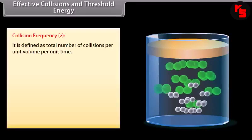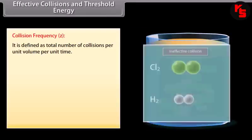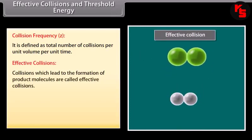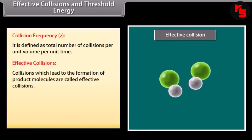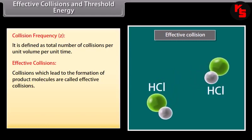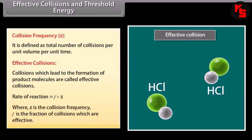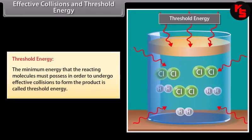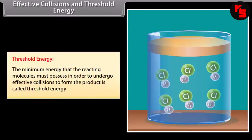Collision frequency is defined as the total number of collisions per unit volume per unit time. Effective collisions are collisions which lead to the formation of product molecules. Rate of reaction = F × Z, where Z is the collision frequency and F is the fraction of collisions which are effective. Threshold energy is the minimum energy that the reacting molecules must possess in order to undergo effective collisions to form the product.